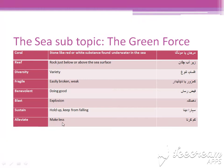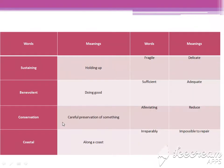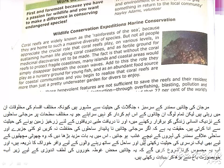Elevate: make less, kam karna. Sustaining: holding. Conservation: careful preservation of something. Coastal: along a coast. Fragile: delicate. Sufficient: adequate. Elevating: reduce. And irreparability: impossible to repair. Now let's start our chapter.